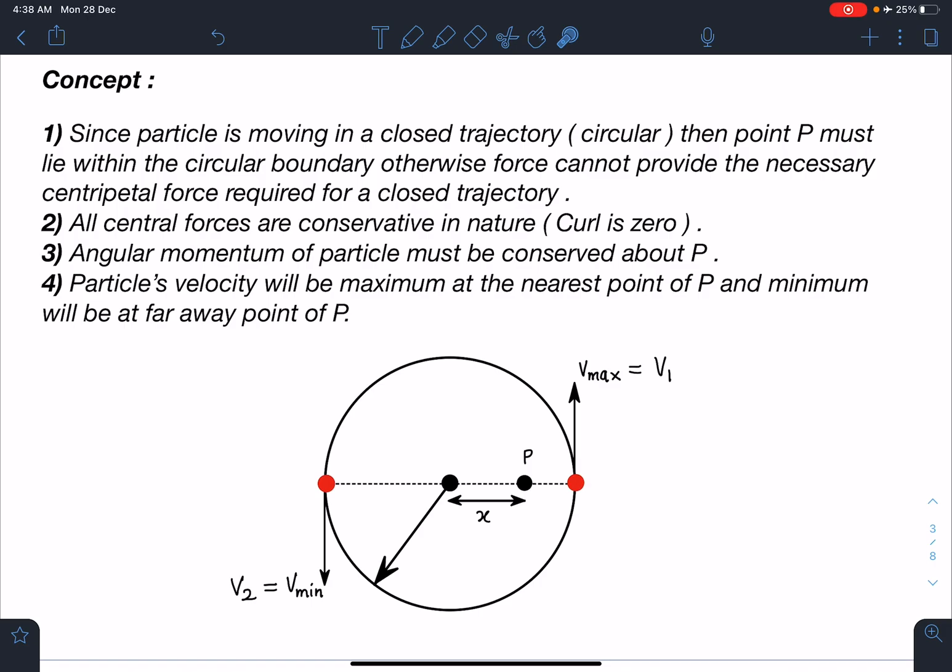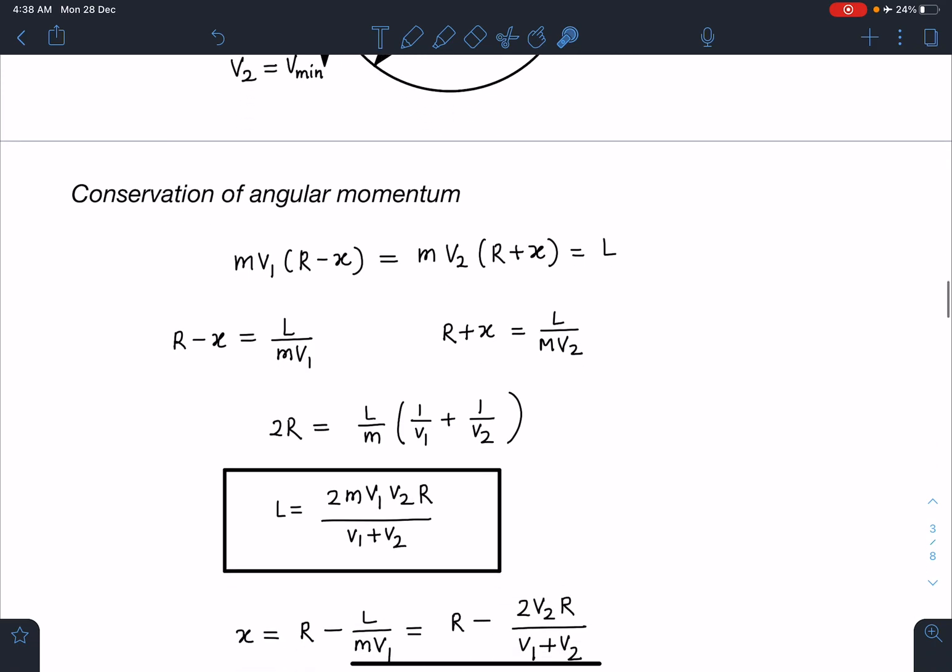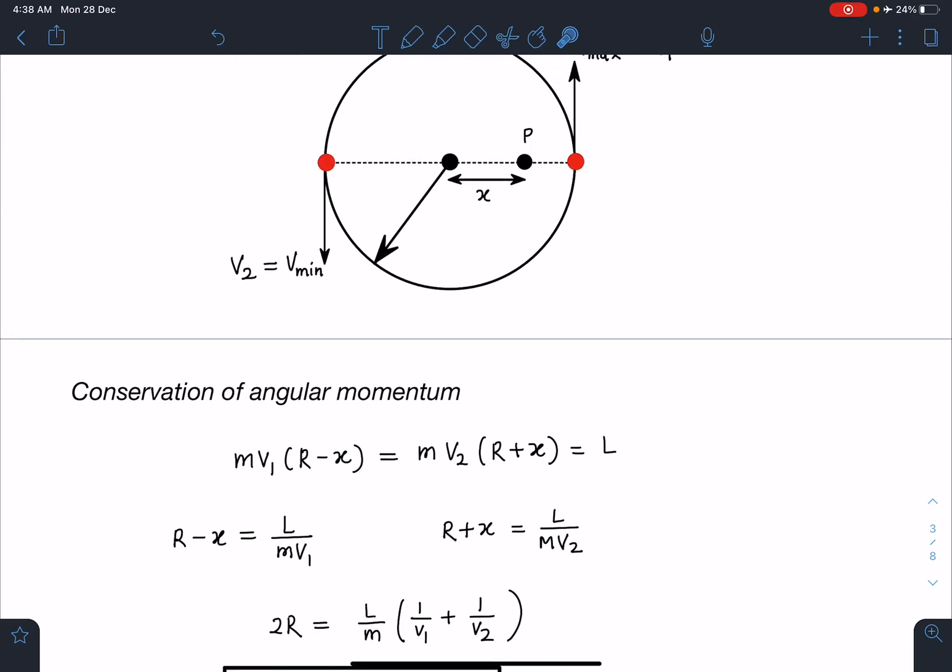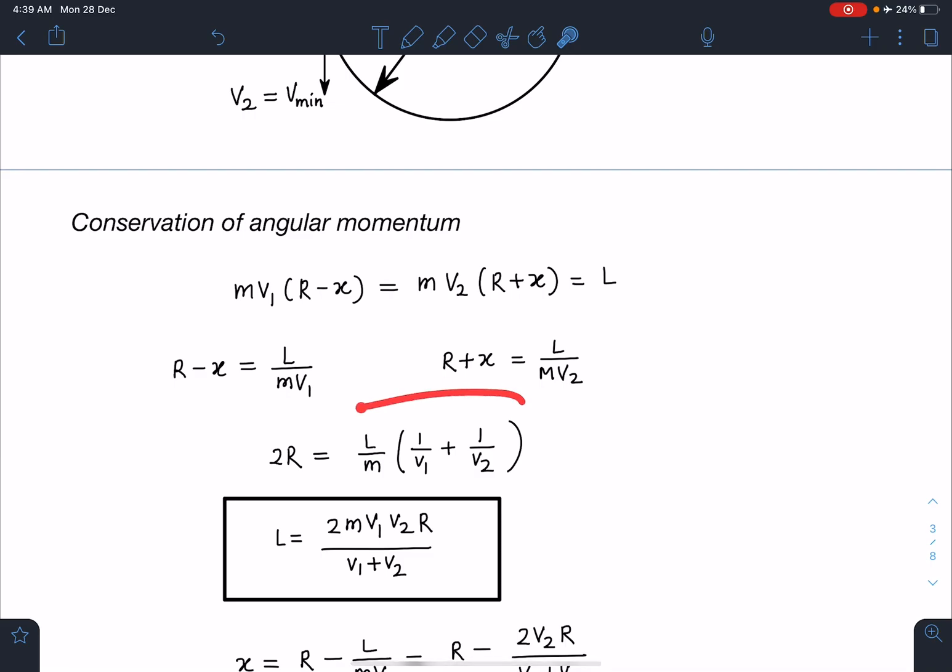v_max I'm calling as kv₀, and minimum is given as v₀. So if we conserve angular momentum about P, I can write m·v_max times (r minus x) must equal m·v₂ times (r plus x), which equals the angular momentum L. From here, (r minus x) value I'm getting as L/(m·v₁), and (r plus x) as L/(m·v₂). Let's add these two equations. We get 2r equals L/m times (1/v₁ plus 1/v₂). When we simplify, we get angular momentum value as L = 2m·v₁·v₂·r/(v₁ plus v₂).